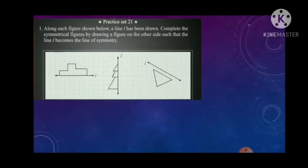Let's discuss the question from practice set 21. Along each figure shown below, a line L has been drawn. Complete the symmetrical figures by drawing a figure on the other side such that the line L becomes the line of symmetry.